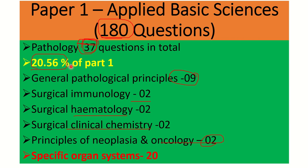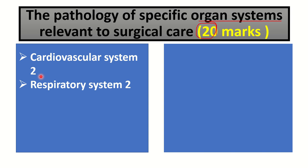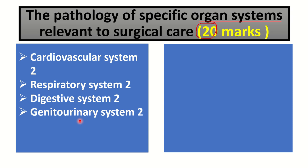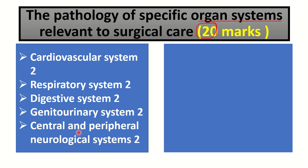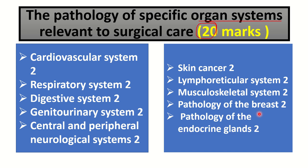Pathology contributes about 20.5 percent — one fifth of Paper One of the MRCS Part A exam — with a total of 37 questions. The organ-related system carries about 20 marks with the greatest contribution in pathology. The systems covered include: Cardiovascular System, Respiratory System, Digestive System, Genitourinary System, Central and Peripheral Neurological System, Skin Cancer, Lymphoreticular System, Musculoskeletal System, Pathology of the Breast, and Pathology of the Endocrine Glands.